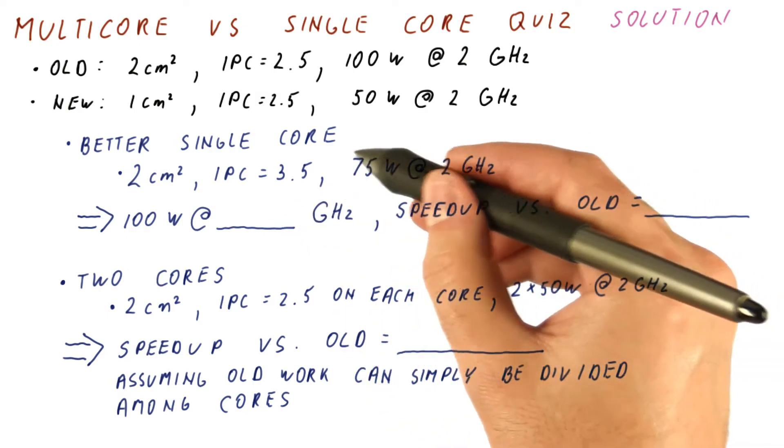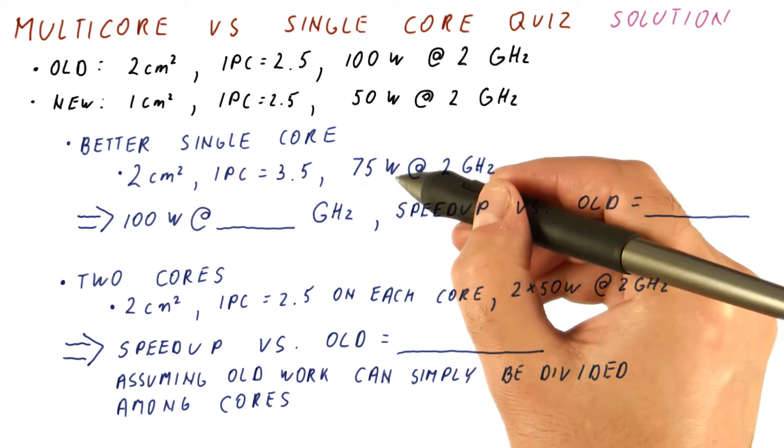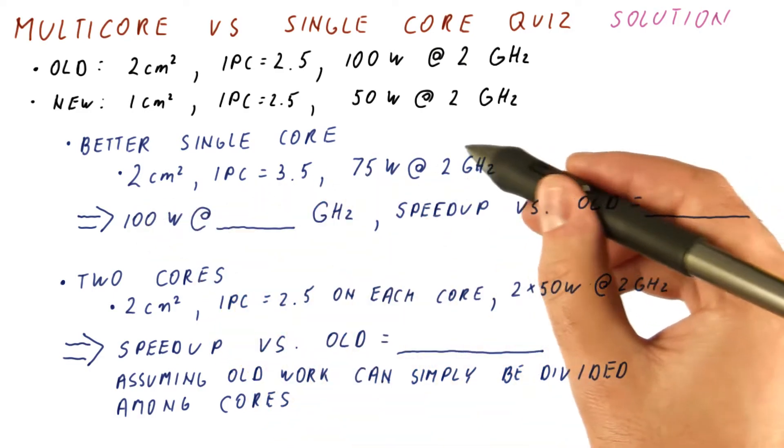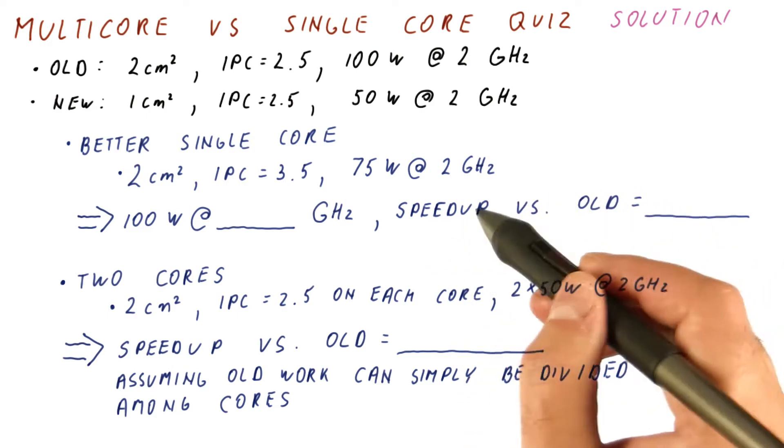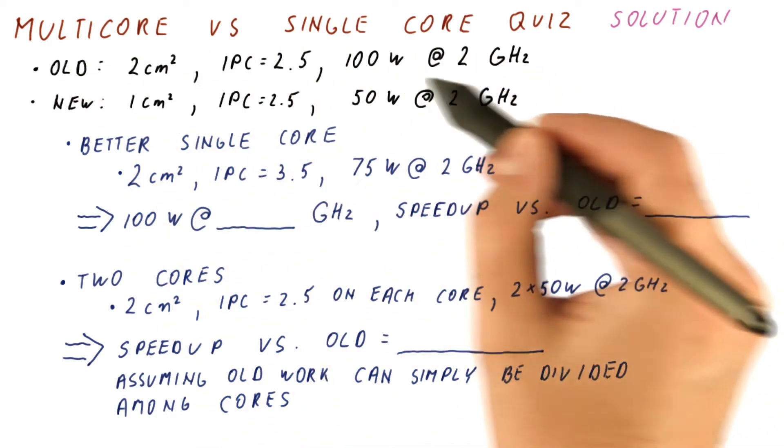And then the question is, if we do consume the whole power budget of the chip, which is 100 watts, how much can we increase this frequency? And with that frequency, what is the overall speedup versus what we had in the old technology?